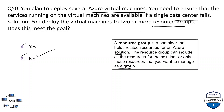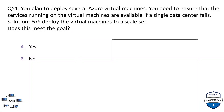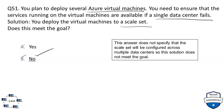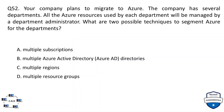Question 51: you plan to deploy several VMs and need to ensure services remain available if a single data center fails. Solution: deploy the VMs to a scale set. Does this meet the goal? The answer is again no, because the solution does not specify that the scale set will be configured across multiple data centers. It does not provide replication of resources across multiple data centers, so it does not meet the goal.